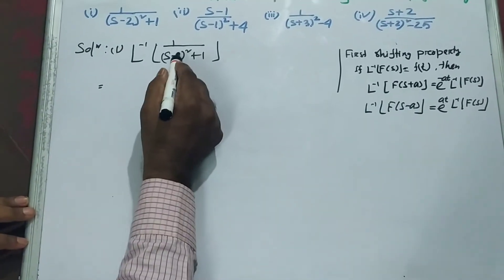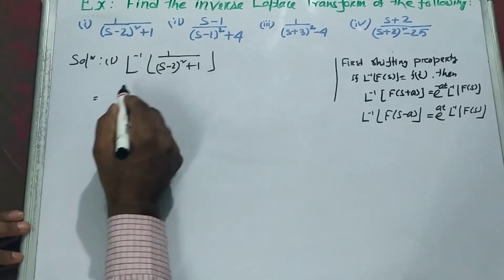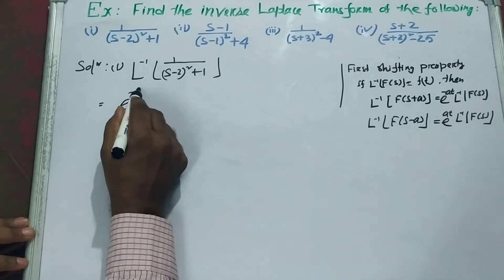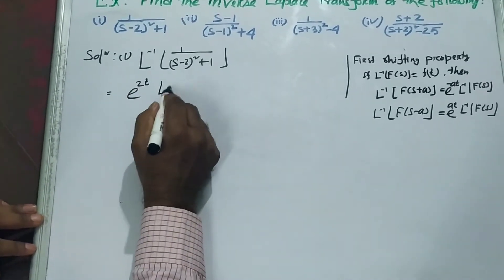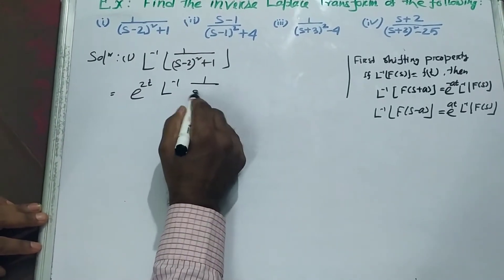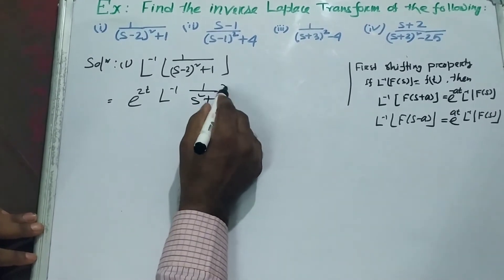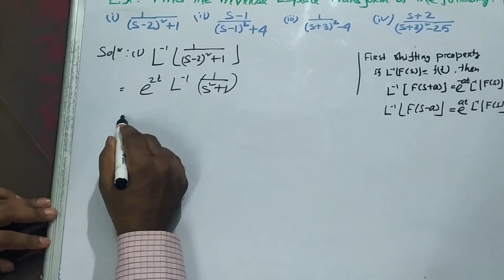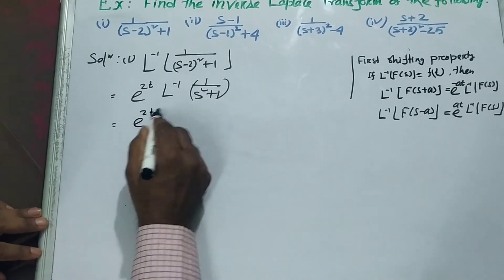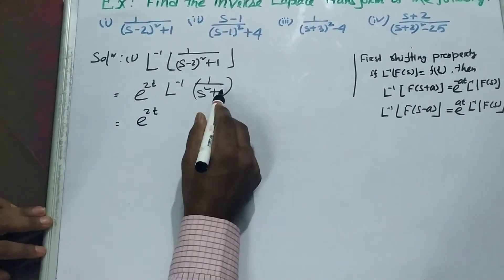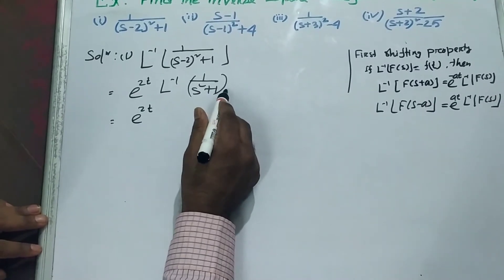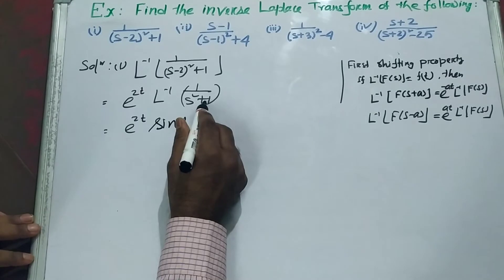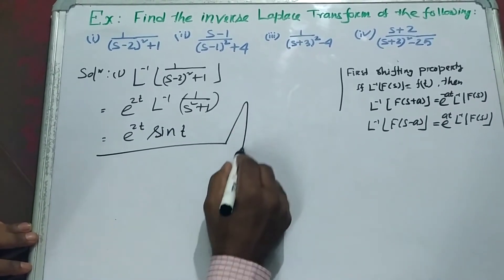Now we want to remove this 2. If we remove this 2, then e to the power plus 2t times L inverse of 1 by (s squared plus 1). This is our direct formula: 1 by (s squared plus 1) means 1 is squared, and this gives sin(1·t). So the answer is e to the power 2t times sin(t).